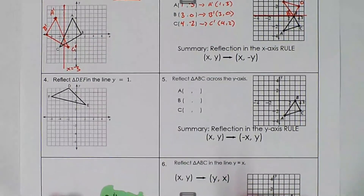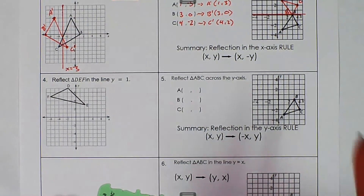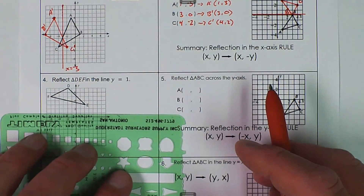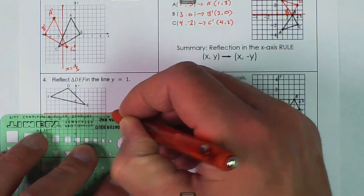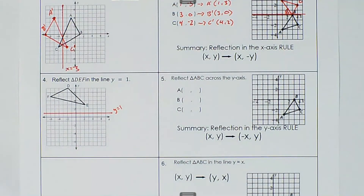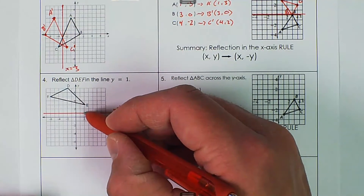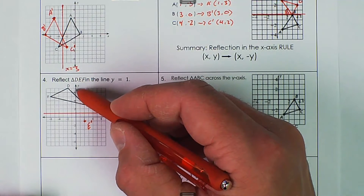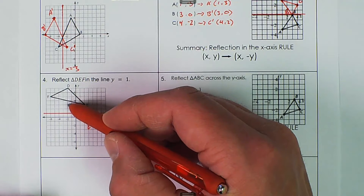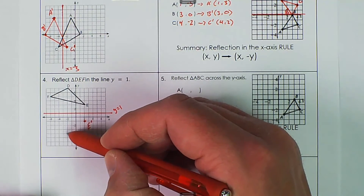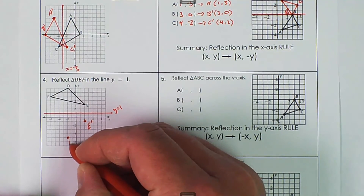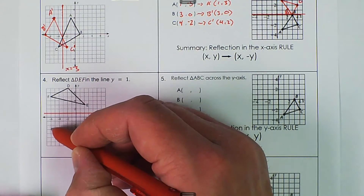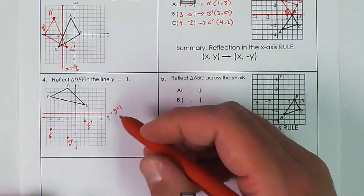Example four: reflect triangle DEF in the line y equals 1. Y equals 1 is a horizontal line right here. All we have to do is count: down one, two — one, two — that's going to be E prime. D is up at seven, so one, two, three, four, five, six — one, two, three, four, five, six — that's D prime. Then F: one, two, three, four — one, two, three, four — that's F prime. Then we just connect our dots.